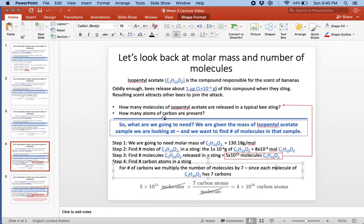The last question asks how many atoms of carbon are present in a bee sting. We know there are 5 times 10 to the 15 molecules of isopentyl acetate, but how many carbon atoms are present? For that, we use the ratio from our formula. For every one molecule of isopentyl acetate, there are 7 atoms of carbon. We can take our 5 times 10 to the 15 and use that ratio. If you need to put a 1 here, that's totally fine. Molecules and molecules cancel out; carbon atoms is what we have left. When we multiply these out, we end up with 4 times 10 to the 16 carbon atoms.